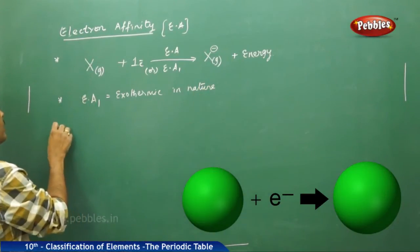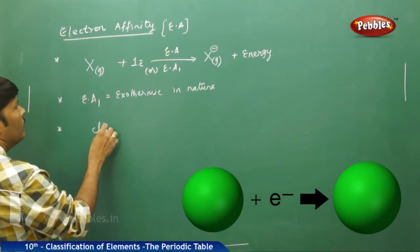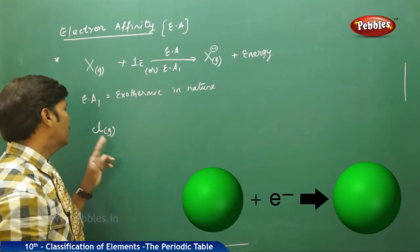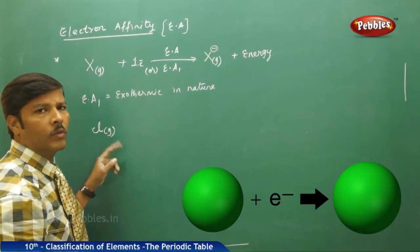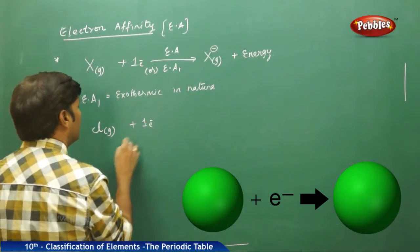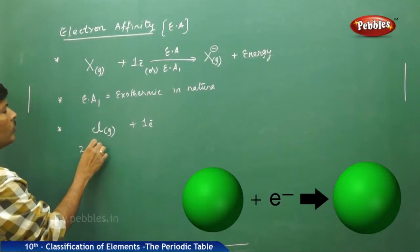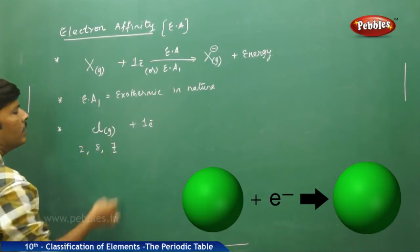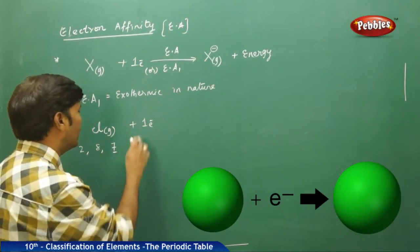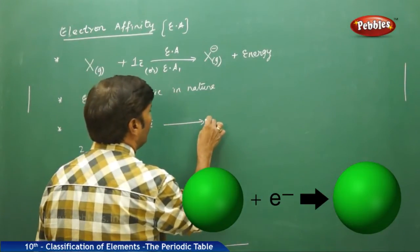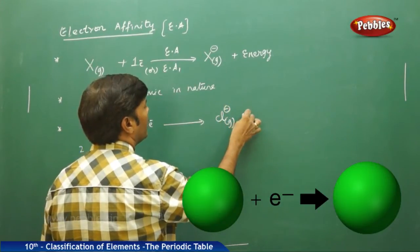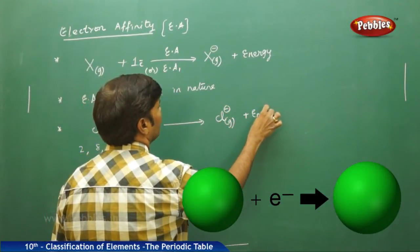Take one example — take chlorine. Chlorine is a neutral isolated gaseous atom with electronic arrangement 2, 8, 7. In the outermost orbit, chlorine has 7 valence electrons. It gains one electron and forms a uninegative gaseous ion and it releases energy.